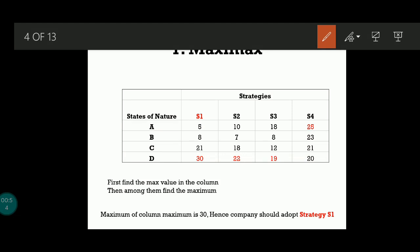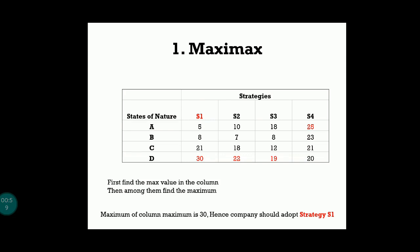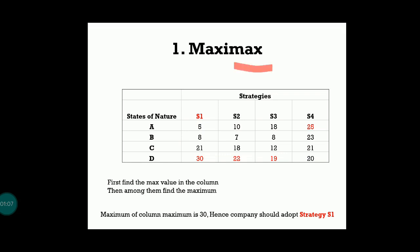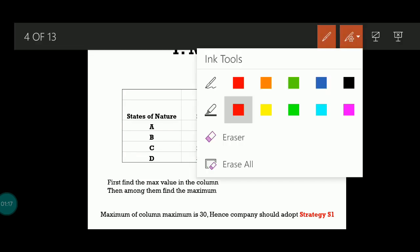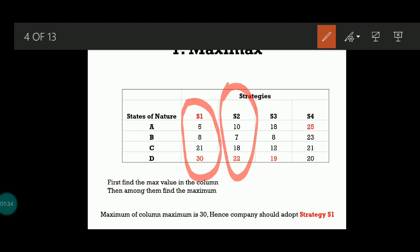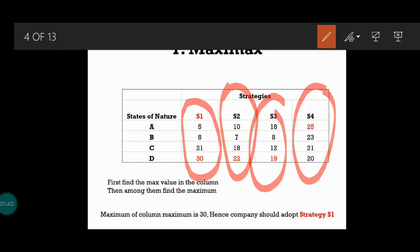Now let's look at the maximax criterion. When doing maximax, minimin, minimax, or maximin, you do the second word first, then the first. For maximax, both are 'max' so it doesn't change things. Take the first column S1 — the maximum value is 30. In S2 the maximum is 22, in S3 it is 19, and in S4 it is 25. We took columns S1, S2, S3, S4 and found the maximum value in each.